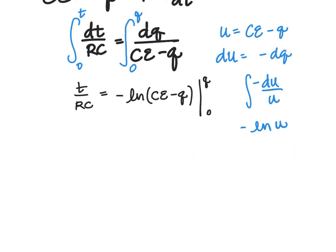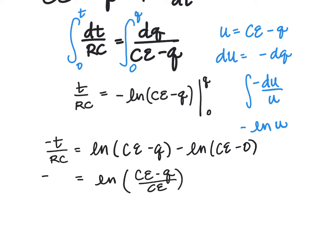First of all, I'm going to divide this negative sign over, so I'll have negative T over RC is equal to now the LN of capacitance times EMF minus Q minus the LN of capacitance times EMF over capacitance times EMF, and that's equal to negative T over RC.